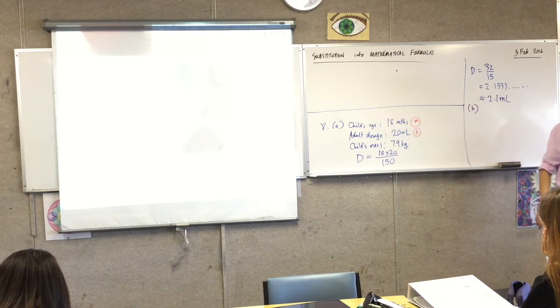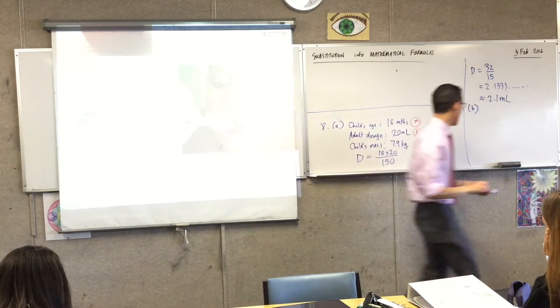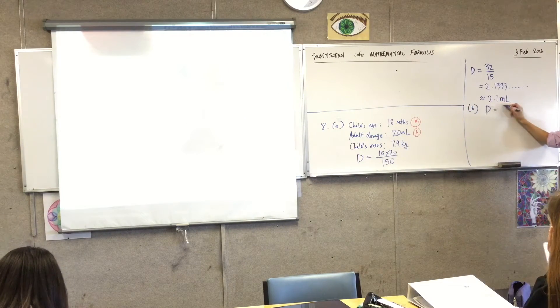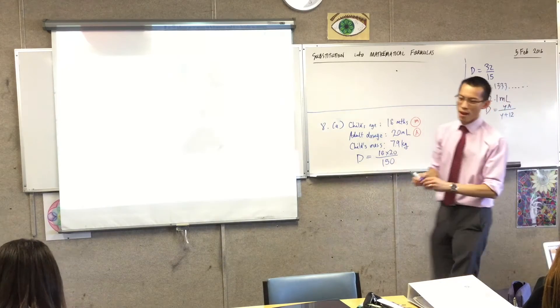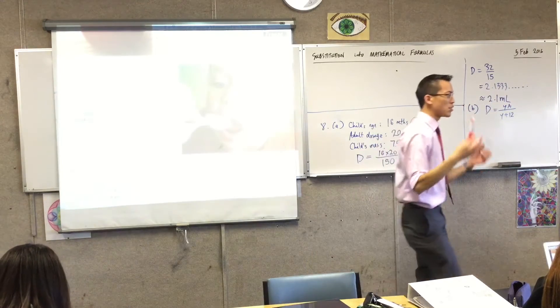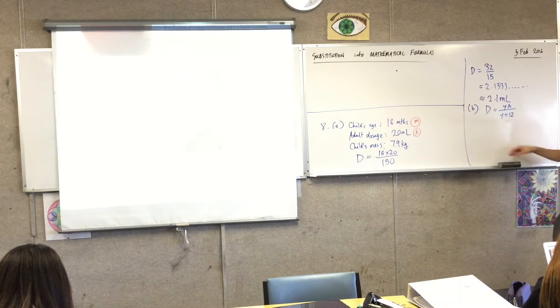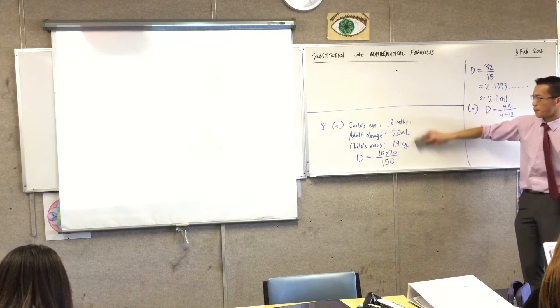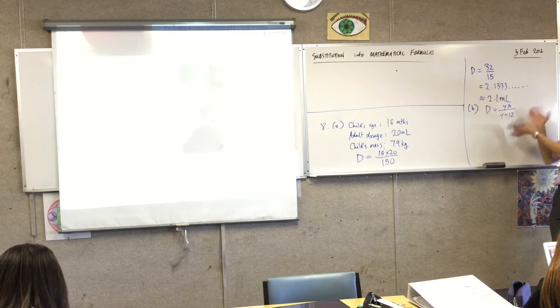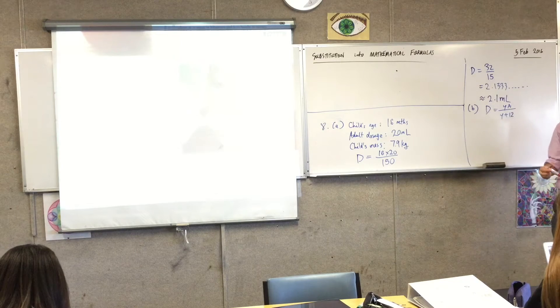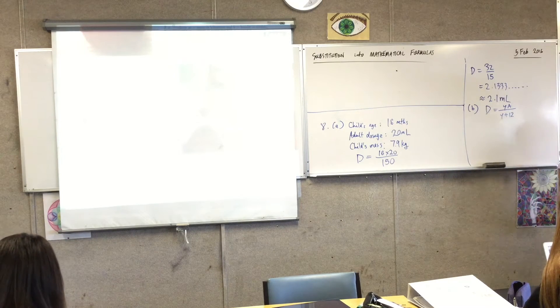So for part B, you look at the equation that they give you. I'm actually just going to write that first. D equals YA on Y plus 12. Okay, now, first order of business is, because you've got a new formula, I'm going to take these pronumerals that I had before, and I'm going to get rid of them. So, I have a Y and I have an A. Where does the A come from? That's the easy part first.